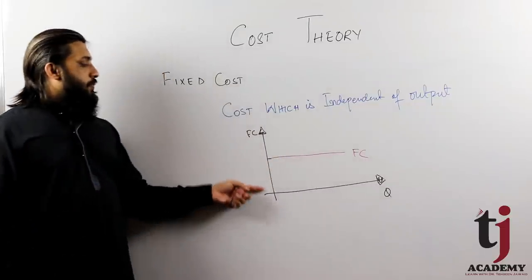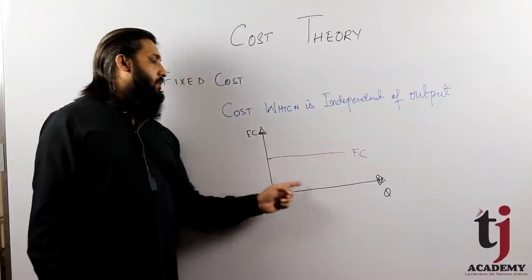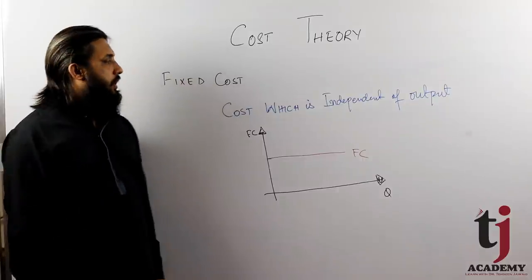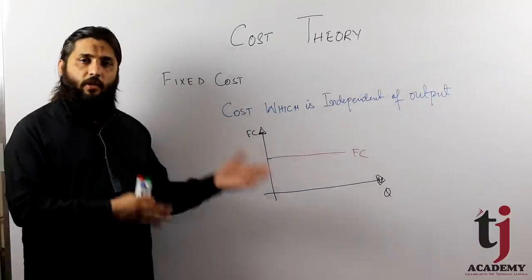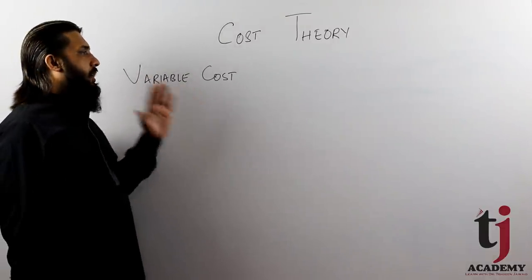This cost you have to pay whether you produce or not. This cost is fixed and you have to pay. So this is fixed cost. Now we have to discuss the variable cost. In the discussion of variable cost,